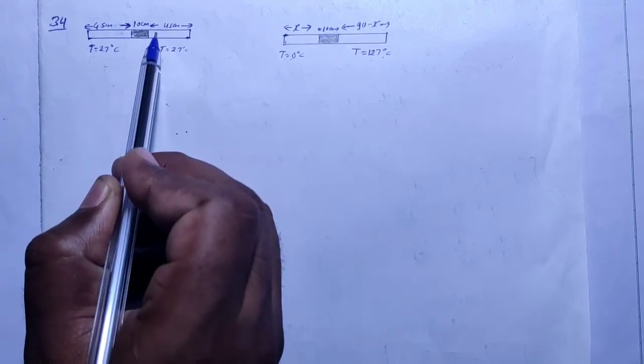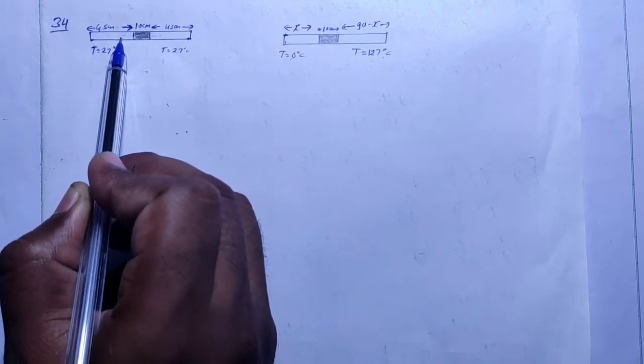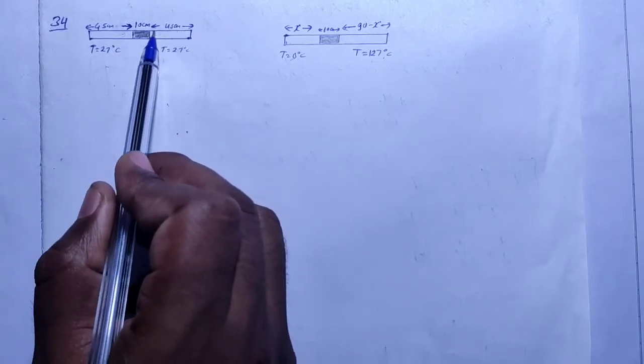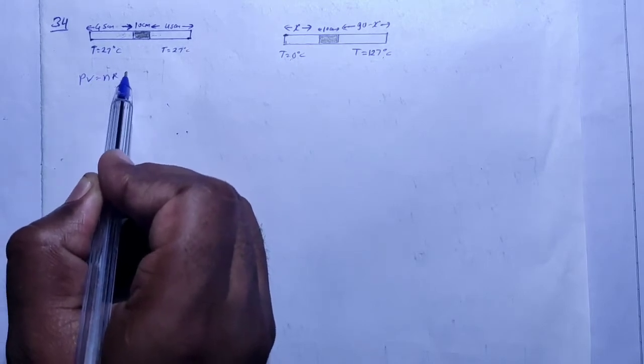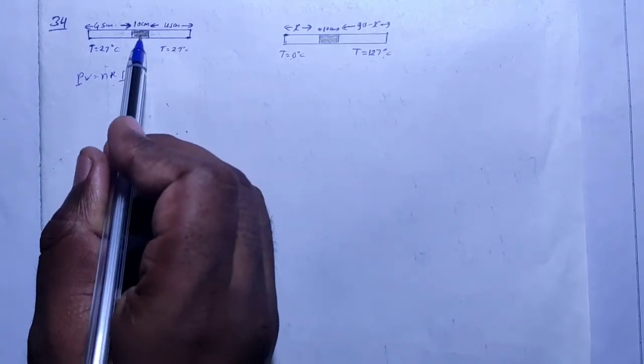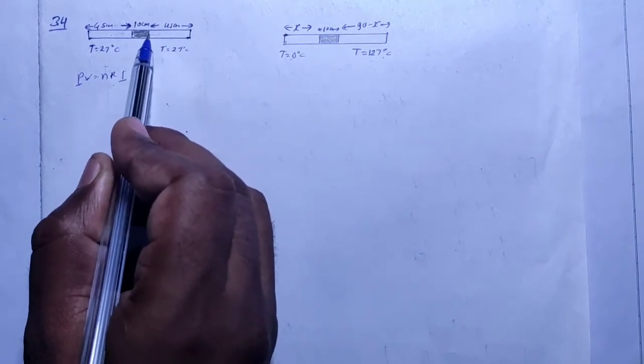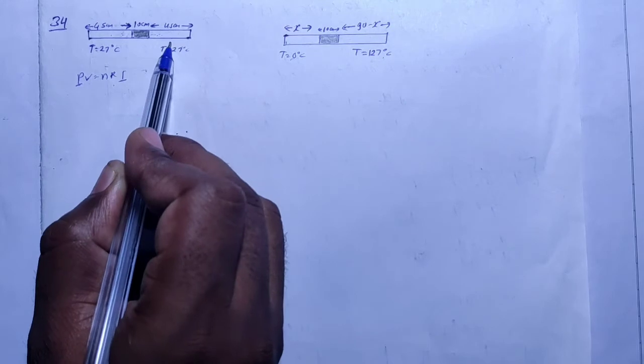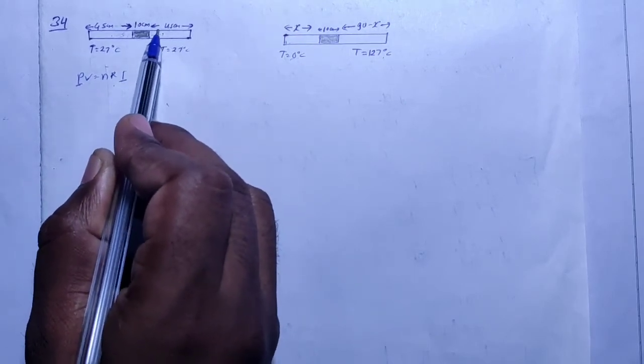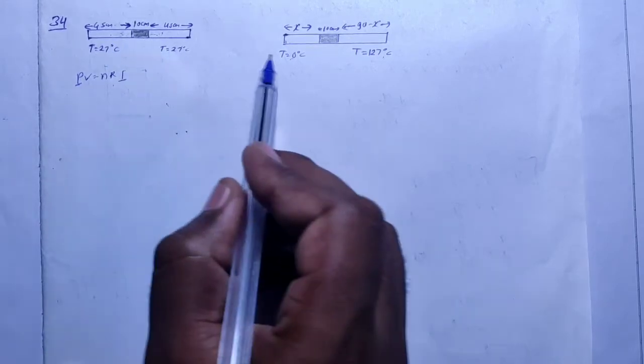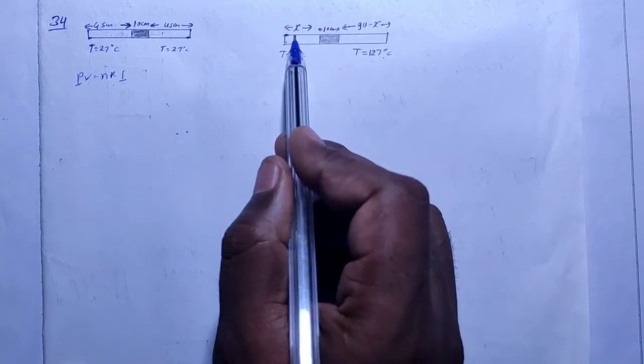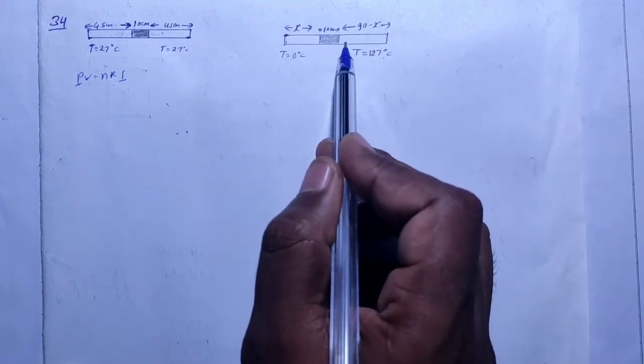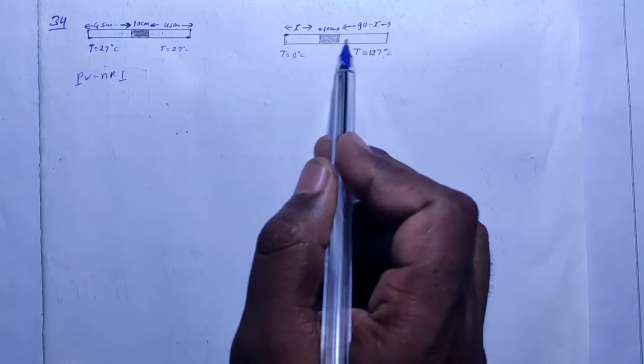Here, in this condition, the pressure is given as 76 cm of mercury. Initially, the pressure is the same on both sides. This is the equilibrium. Now, the temperature is reduced on one side and increased on the other. When temperature is reduced here, the pressure is reduced. When temperature is increased, the pressure is increased there. So the pressure changes.